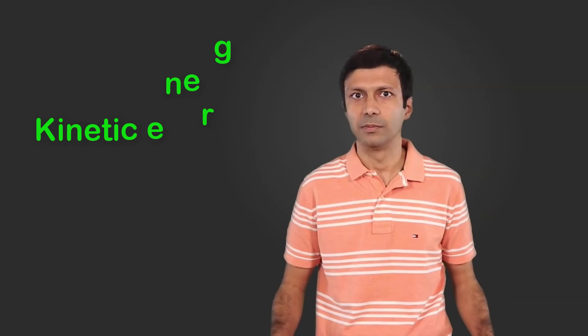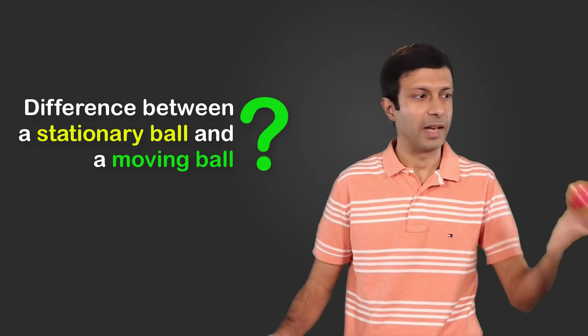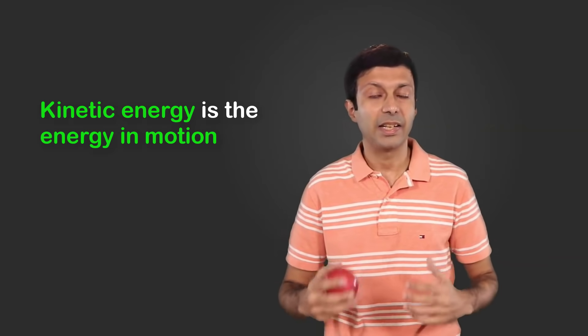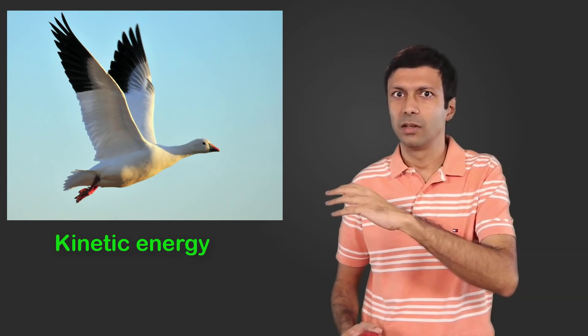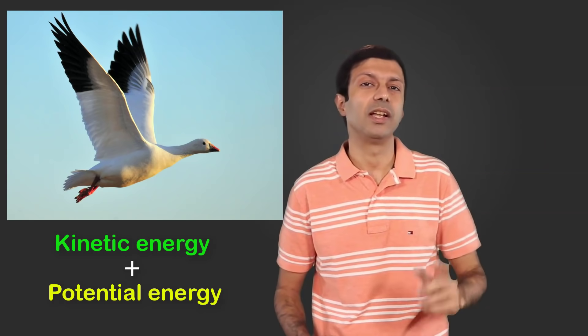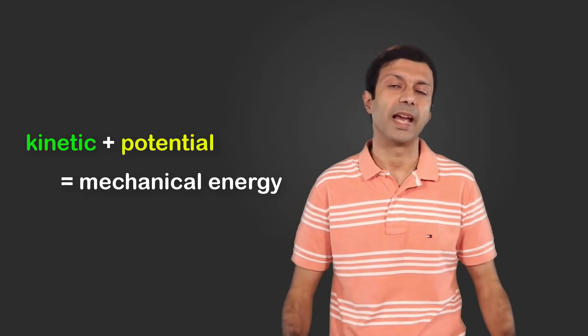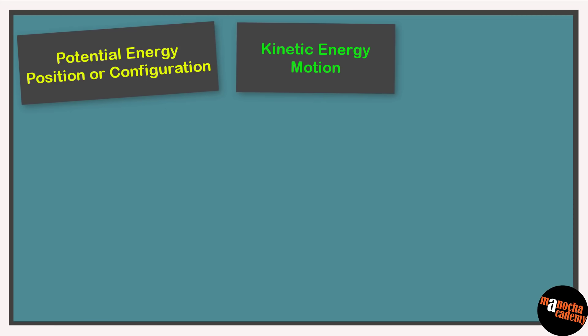Next, we have kinetic energy. What is the difference between a stationary ball and a moving ball? The difference is a moving ball possesses kinetic energy — kinetic energy is the energy of motion. When you're running or walking, you have kinetic energy. A moving car has kinetic energy. What about a flying bird? Since it's flying, it has kinetic energy, but the bird is also at a height, so it has potential energy as well. This sum of kinetic and potential energy is known as mechanical energy.